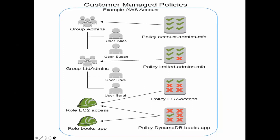A good visual here is customer-managed policies. For example, you have a group called 'admins' with two users — Alice and Suzanne — and a policy called 'account admin' which includes MFA (multi-factor authentication). These two users who are part of the admins group have everything, as you can see by the checkmarks. You define those policies, associate them with the group, create the users, and associate users to that group. This is how policies, users, and groups are interconnected.